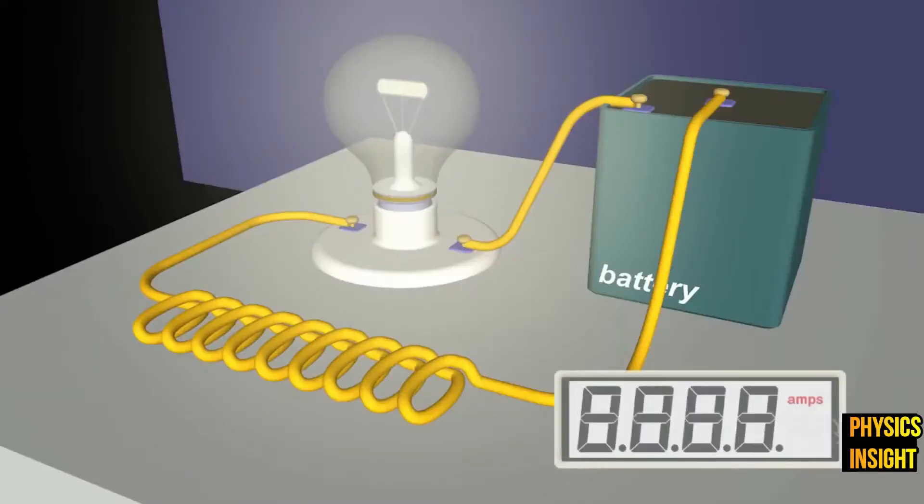When we added wire, however, the bulb was not as bright. That meant less current went through the circuit. We can only measure 1.5 amperes in this case. Why?